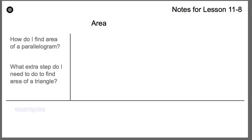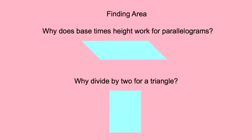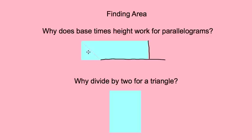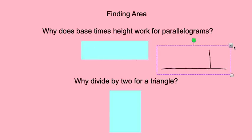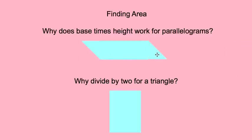Here are our notes for lesson 11-8 on area. How do I find the area of a parallelogram? The things we have to understand is why does base times height work for a parallelogram. Base times height is the area of a rectangle. A parallelogram isn't a rectangle, but if you move the pieces around to reconfigure it, you can make a rectangle. The area of a parallelogram is exactly the same as the area of a rectangle — that's why base times height will work.